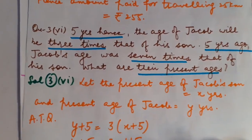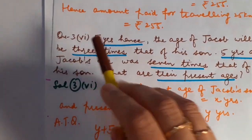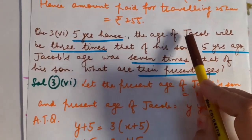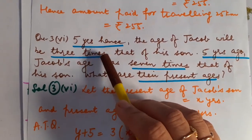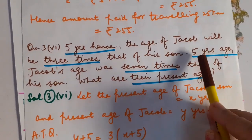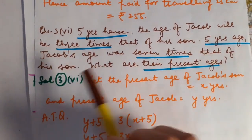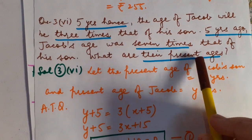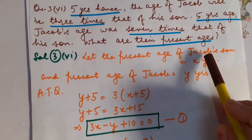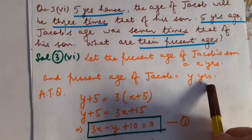Now this is the next question, question number 3, sixth part. Five years hence — meaning five years later — the age of Jacob will be three times that of his son's age. Five years ago, Jacob's age was seven times that of his son's age. So, what are their present ages? Let the present age of Jacob's son be X years and the present age of Jacob be Y years.